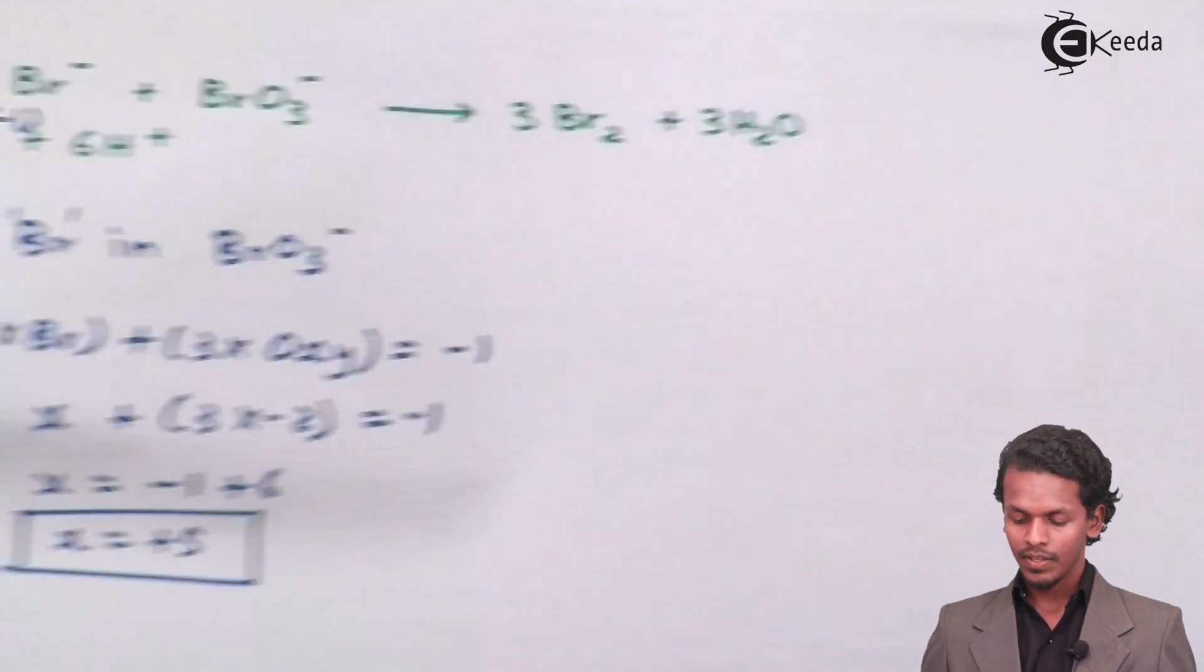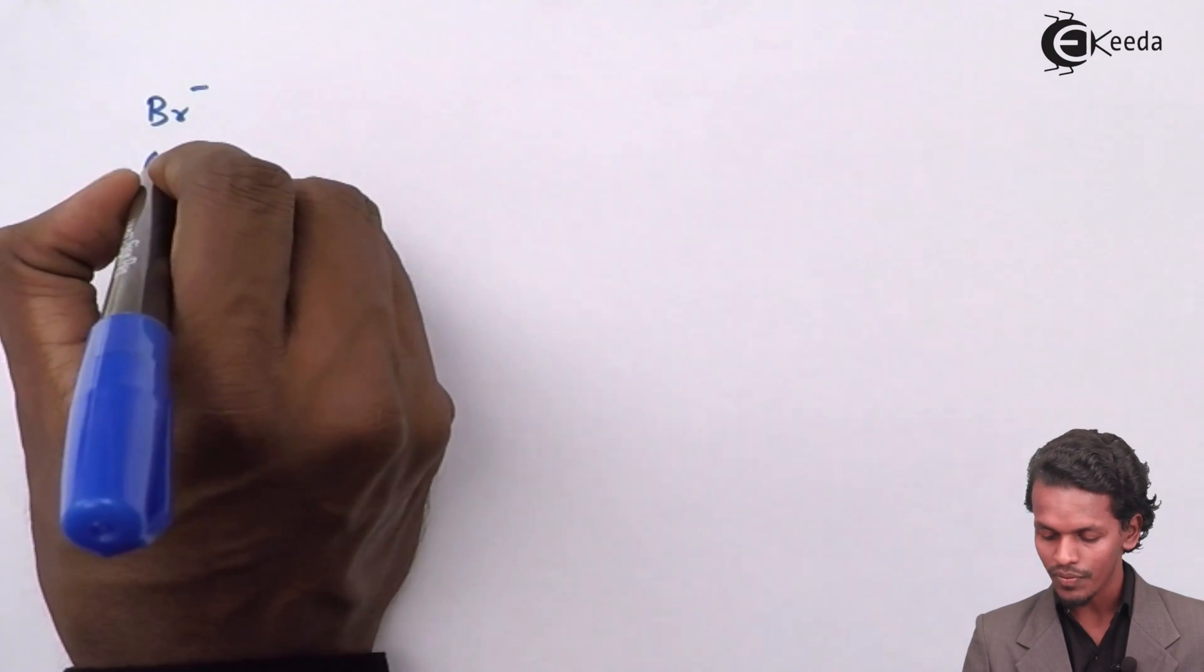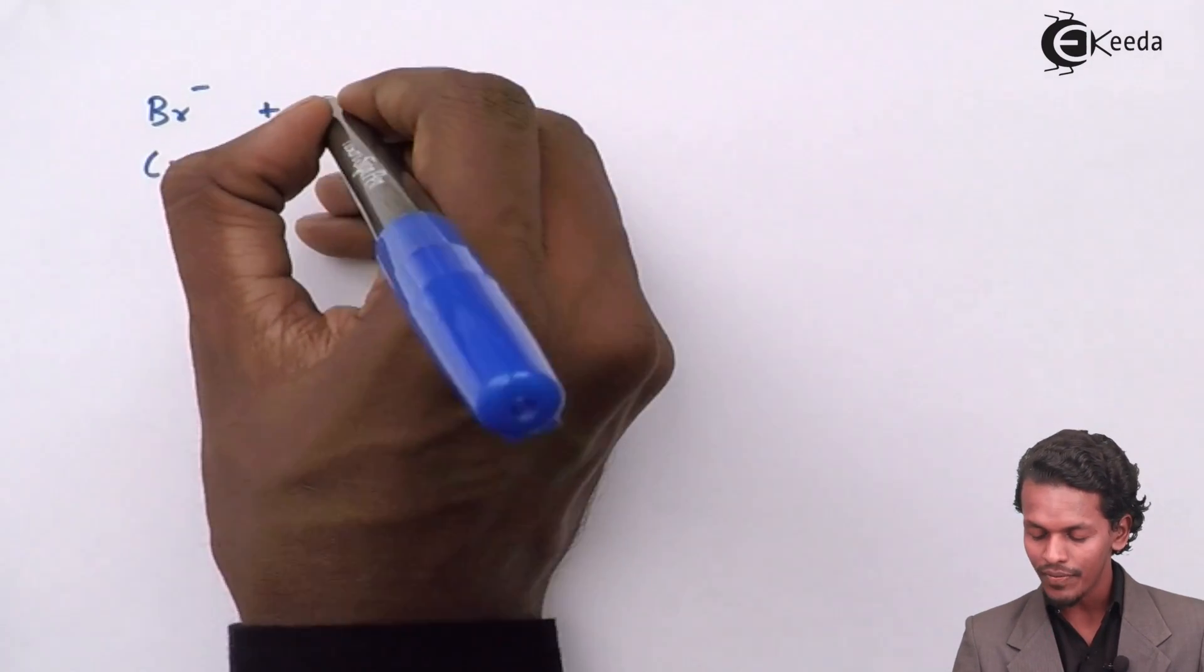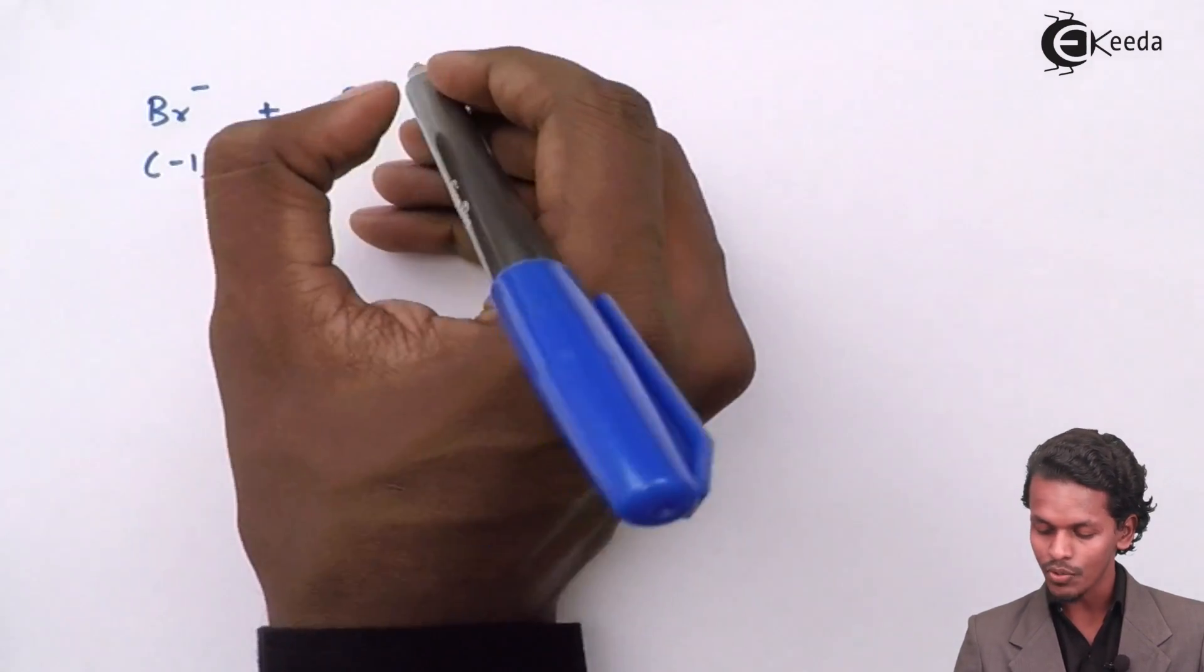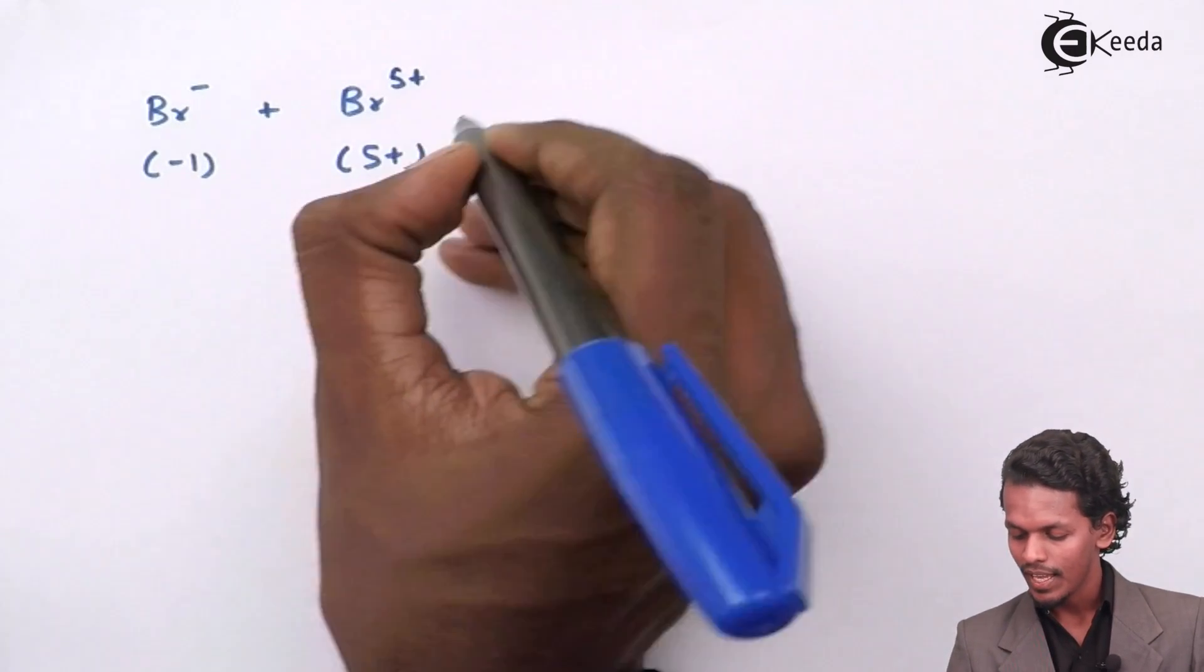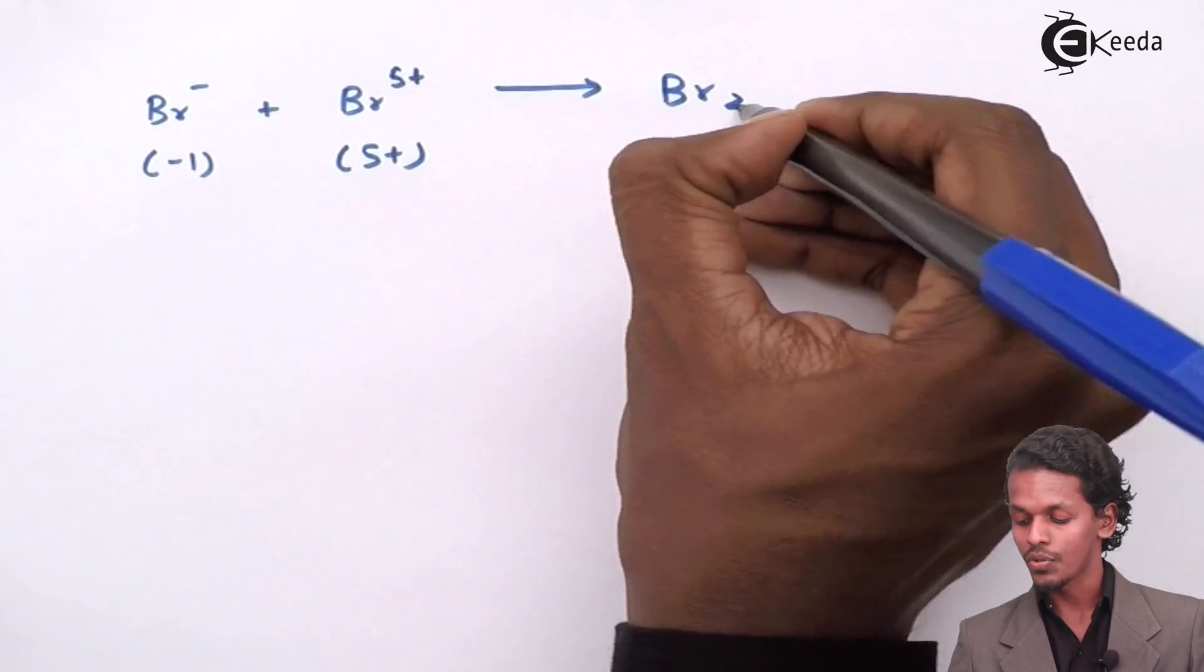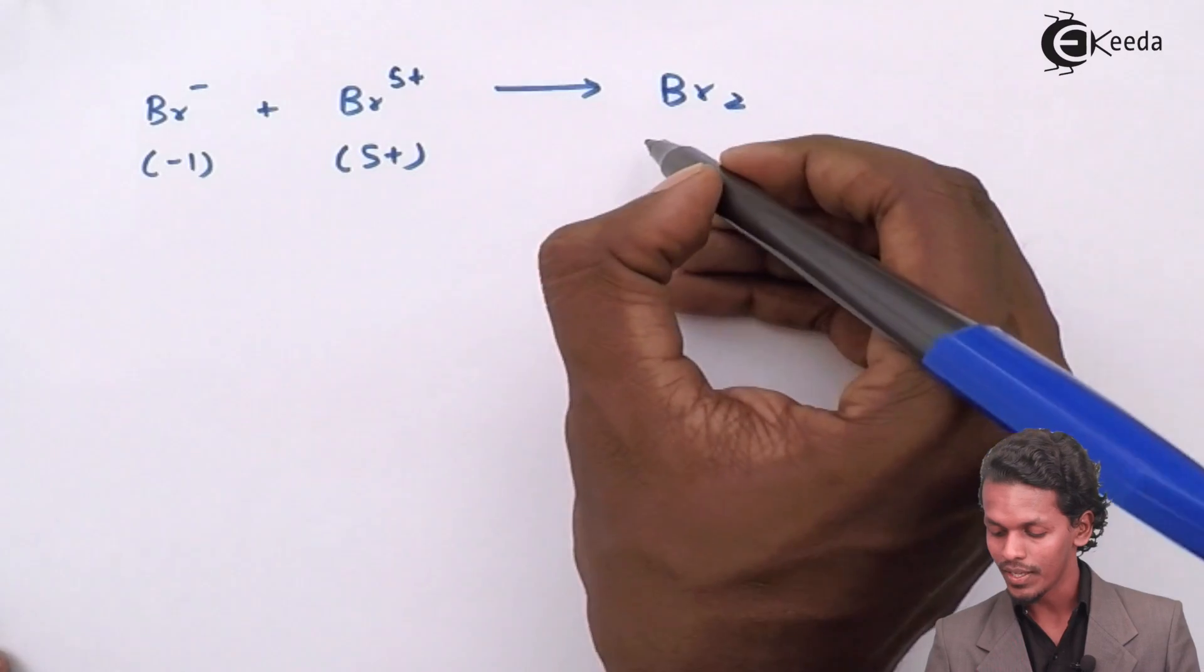Basically, the Br⁻ which has an oxidation number of minus 1 is combined with bromine which has an oxidation number of plus 5, and it gives us a product Br₂ in which the oxidation number of Br is found to be zero.